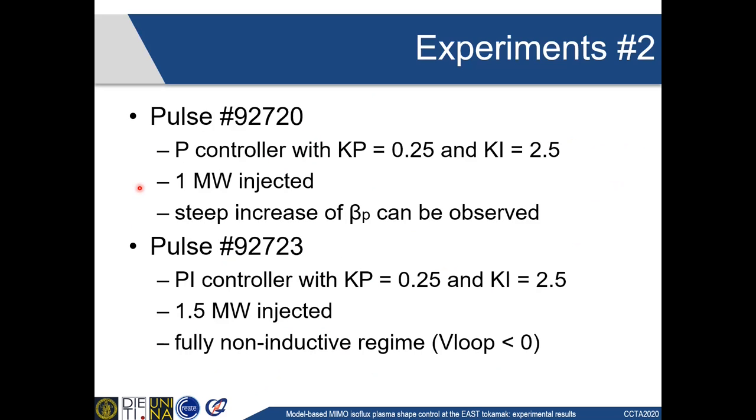These quantities were controlled to zero at the target X-point location, while the actual position of the X-point was reconstructed, and it's shown here to have a more intuitive idea of what's going on. Then we have two more pulses that are Pulse 92720 and Pulse 92723. In these experiments we tried to raise the amount of auxiliary power, switching on both of the available lower hybrid antennas. In both cases, a second LH antenna was switched on at t equal to 4 seconds to inject up to 1 megawatt of heating power. And this resulted in a steep increase of beta-P that acted as a disturbance in the plasma shape control.